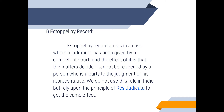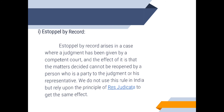Estoppel by record is created by a final judgment. A party relying on Estoppel by record should be able to show that the matter has been determined by a judgment that is final in its nature. The principle of res judicata in the Civil Procedure Code is a replica of this Estoppel by record.